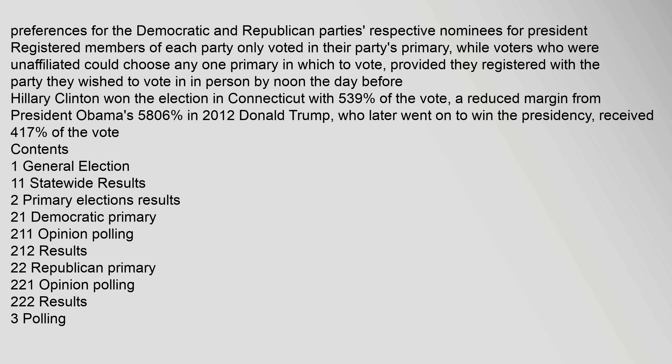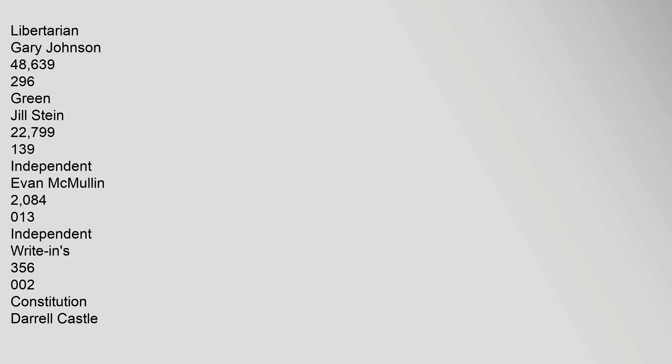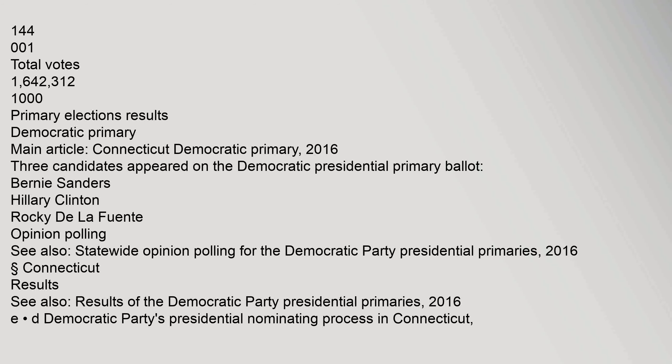General election statewide results for the U.S. presidential election in Connecticut, 2016: Democratic Hillary Clinton received 895,224 votes (54.51%); Republican Donald Trump received 673,066 votes (40.98%); Libertarian Gary Johnson received 48,639 votes (2.96%); Green Jill Stein received 22,799 votes (1.39%); Independent Evan McMullin received 2,084 votes (0.13%); write-ins 356 votes (0.02%); Constitution Daryl Castle received 144 votes (0.01%). Total votes: 1,642,312.